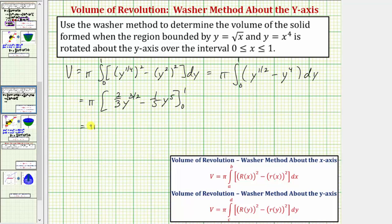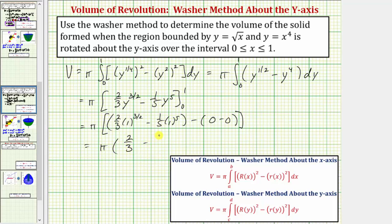Now we evaluate big F of b minus big F of a. When y equals one, we have two-thirds times one to the three-halves minus one-fifth times one to the fifth, and when y is zero, both terms are zero. So we have pi times two-thirds minus one-fifth. The common denominator is fifteen: multiply two-thirds by five over five and one-fifth by three over three, giving ten-fifteenths minus three-fifteenths, which equals seven-fifteenths times pi, or seven pi divided by fifteen.